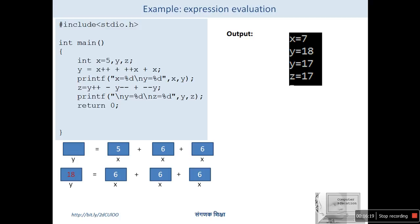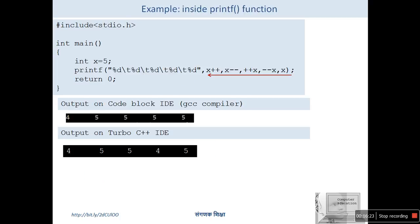Next, let's look at how to evaluate expressions inside a printf statement. Printf has undefined behavior in different compilers. We consider one printf statement to understand undefined behavior in two compilers: GCC and Turbo C++. In the example, x = 5, and printf is given five arguments combining increment and decrement operators: x++, +x, --x, --(x--), and x. The printf statement evaluates arguments in right-to-left order.